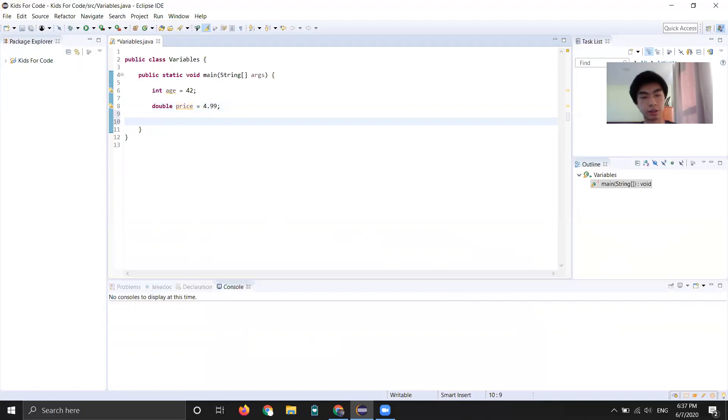Now here's an interesting example. If I do double, let's call it fraction, equals 1/4th, this will actually not store 1/4th. It'll store 0, and I'm not going to get into that because it's a bit too complicated for today. But whenever you want to store fractions, don't write it as a fraction. Just write the decimal form of the fraction. So instead of 1/4th, I would write 0.25.